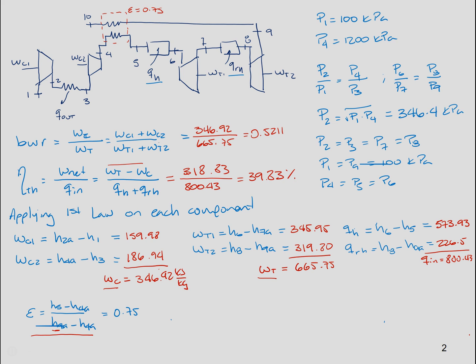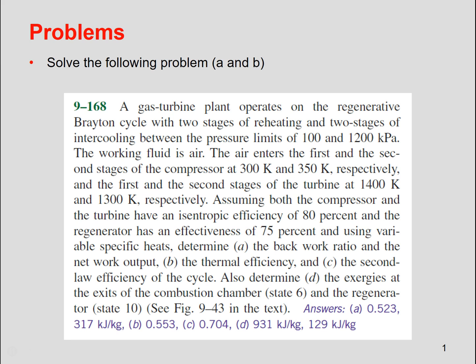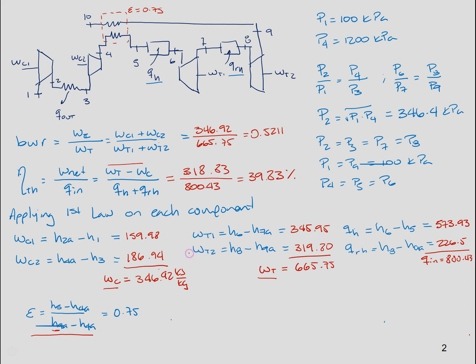Notice that the values we got are very close for the heat in, not the same for the efficiency. We're going to stick to our numbers. Since the back work ratio is close, that means that we have the correct qin and the work of the turbine and the work of the compressor, same for the network. Since we know that our calculation of heating is correct, we're going to stick with our value of 39.83%. Okay guys, I hope that this is clear and that you understand how to analyze these cycles. Thank you very much.